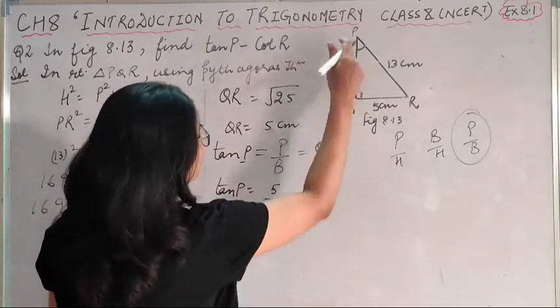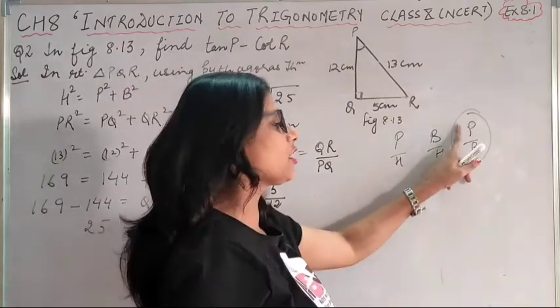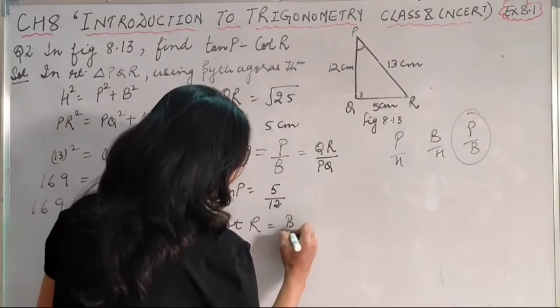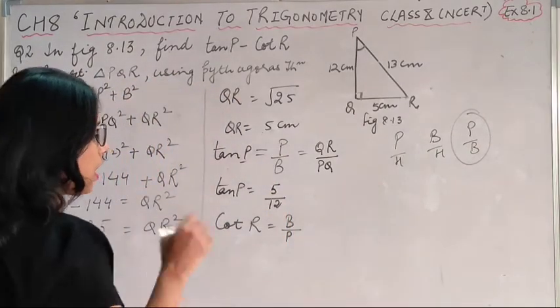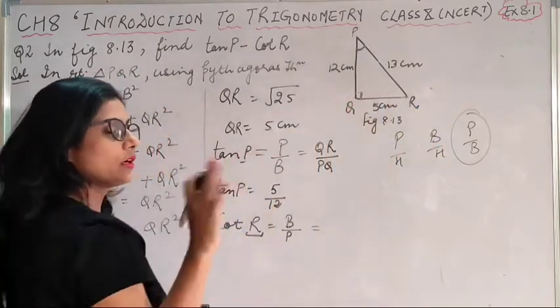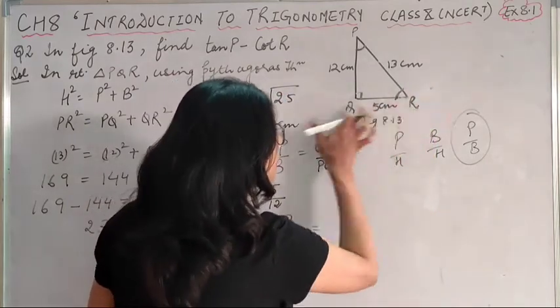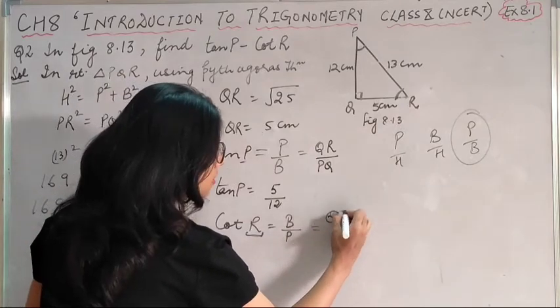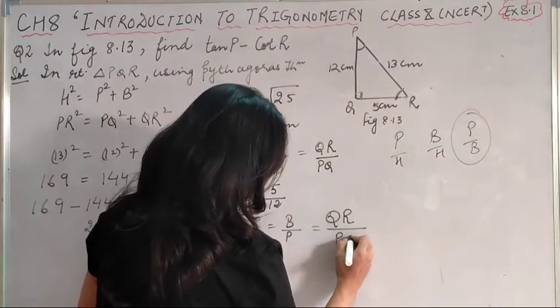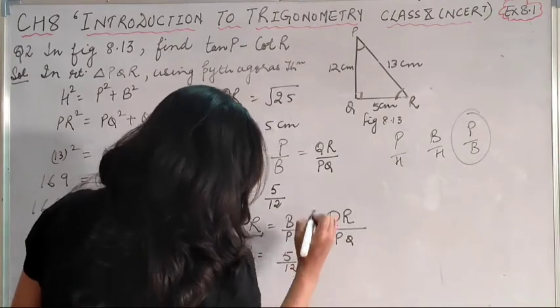Now cot R. The formula is cot equals base upon perpendicular. You should consider the angle carefully. If you don't see the angle straight, you'll get it wrong. The angle is R. According to where the angle and 90 degrees are in one line, the base will be QR. And what will happen in perpendicular? What is in front of R? PQ. So cot R equals QR upon PQ, which is 5 upon 12.